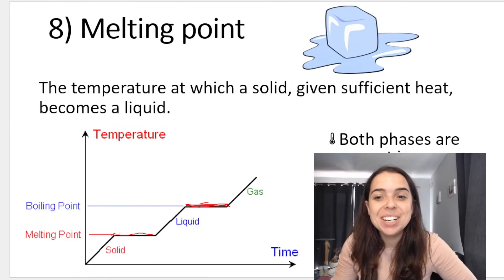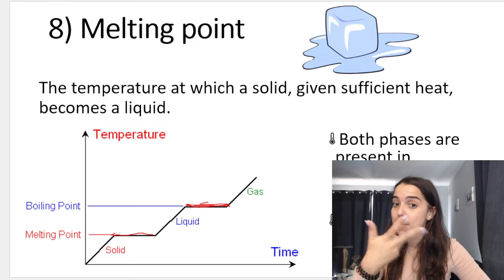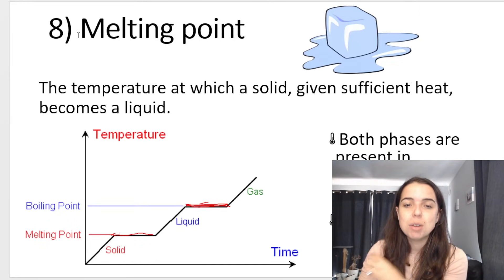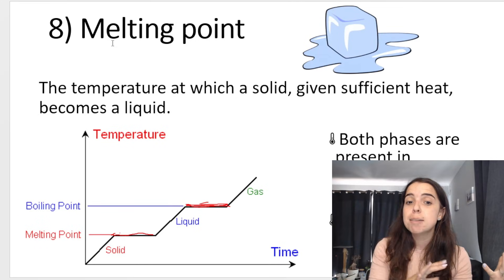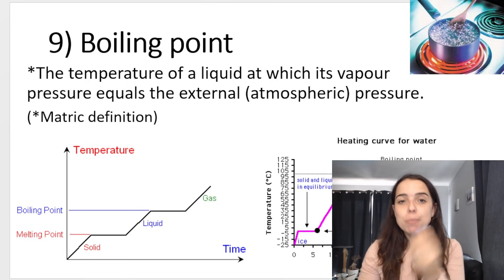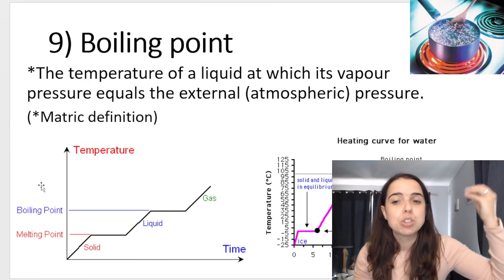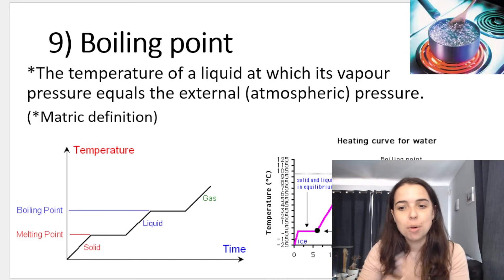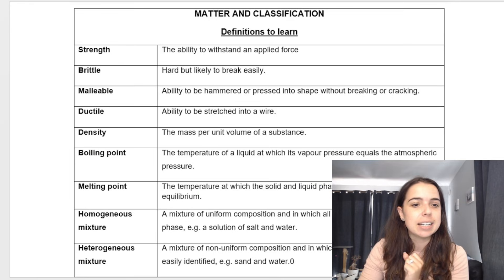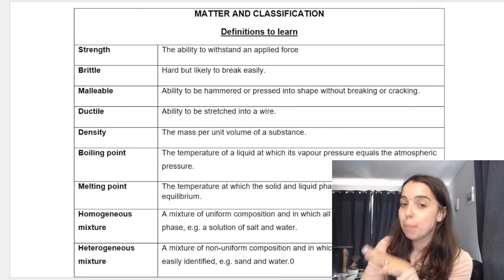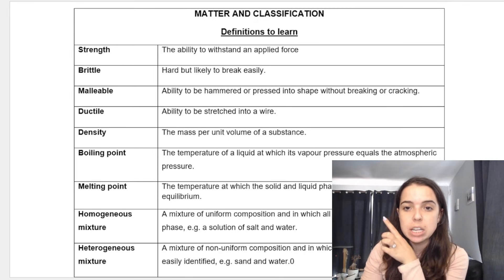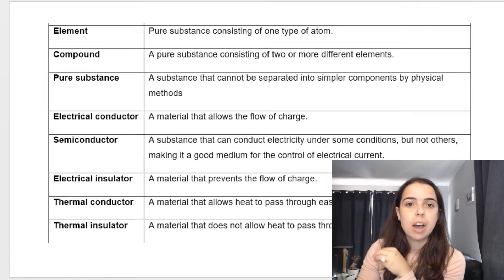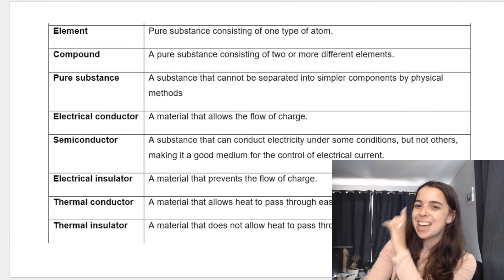Two other properties of materials — melting point and boiling point — will be covered in the kinetic molecular theory section coming up. Melting point is the temperature at which a solid becomes a liquid. Boiling point is the temperature at which the vapor pressure of a substance equals the external atmospheric pressure. These will be covered in more detail in the kinetic molecular theory videos. This is basically a summary of all the different definitions to learn for properties of materials. Some properties like homogeneous and heterogeneous, element, compound, and pure substance are coming in future videos.